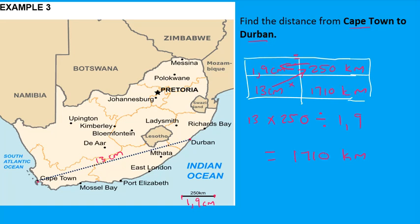What you do with the number line, you can also do with a bar scale. Measure the bar scale with your ruler, put that information in the first row, then measure the distance from one place to another and use the crisscross method to calculate the actual distance. I hope this was useful — thank you.